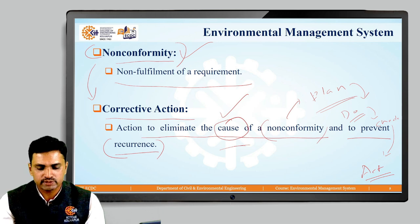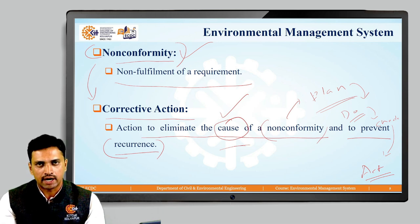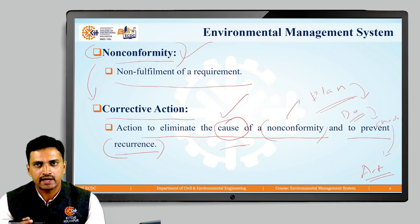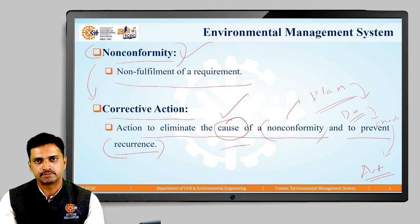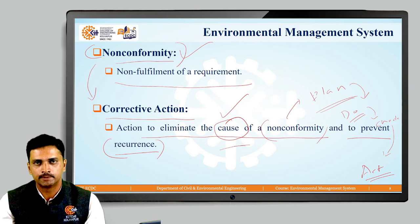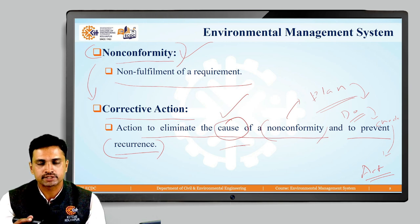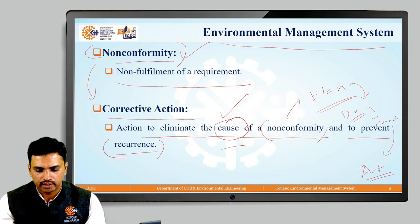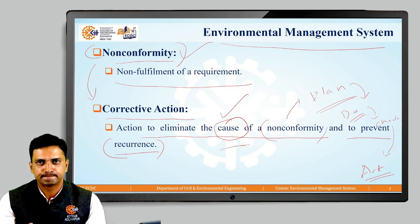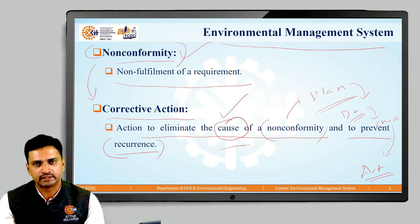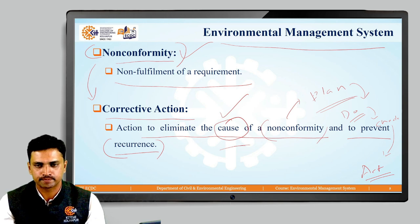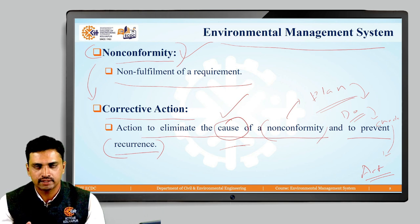This was the last definition from this lesson. Understanding of these definitions and the interrelationships between these terms is very much essential for professionals working under environmental management system. In this way, the definitions are given in ISO 14001:2015 standard for the different terms. For this session, we will stop here and continue the remaining part in the next session. Thank you very much.